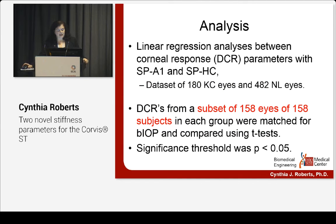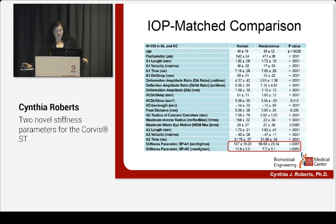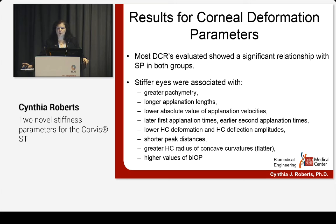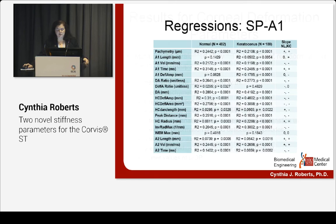We used linear regression analysis and looked at a subset of 158 eyes of 158 subjects matched between normal and keratoconus for the biomechanically corrected IOP value. All parameters except peak distance were significantly different between keratoconus and normal. The A1 parameter has much greater separation than the HC parameter in keratoconus. Stiffer eyes were associated with greater pachymetry, longer applanation lengths, lower absolute values of applanation velocities, later first applanation, earlier recovery, lower amplitudes of deflection or deformation, shorter peak distances, greater radius of curvature, and higher values of corrected IOP.